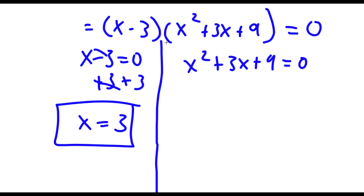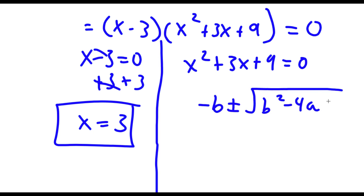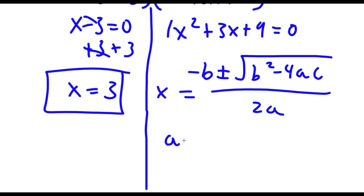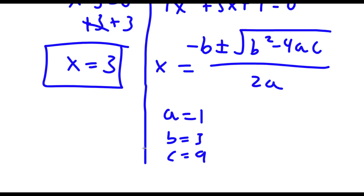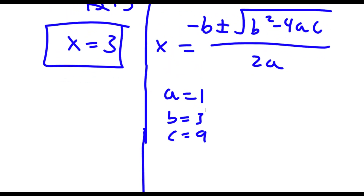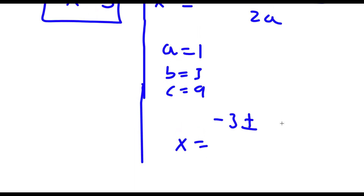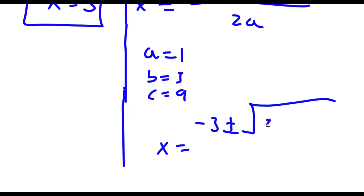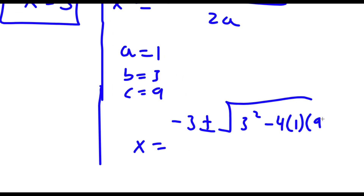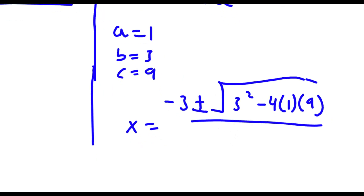Now for x squared plus 3x plus 9 equals 0, I'm going to be using the quadratic formula, which is negative b plus or minus the square root of b squared minus 4ac, all over 2a. Now in this case, a is equal to 1, b is equal to 3, and c is equal to 9. So now I have x is equal to negative 3 plus or minus the square root of 3 squared minus 4 times 1 times 9, all over 2 times 1.